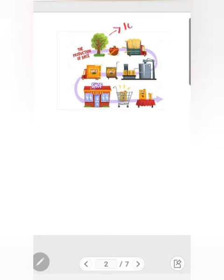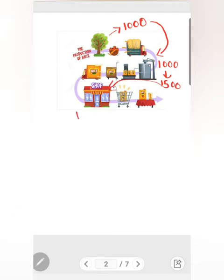Let us start with a numerical example. An orchard owner produces mangoes which he sells for rupees 1000 to a factory owner. The factory owner purchases mangoes for rupees 1000 and converts them into mango juice which he sells for rupees 1500 to the shopkeeper. The shopkeeper purchases this juice for rupees 1500 and sells it for rupees 1700 to the final consumer.